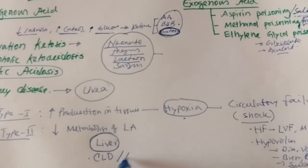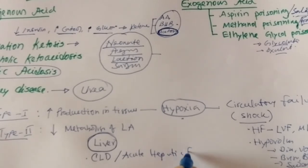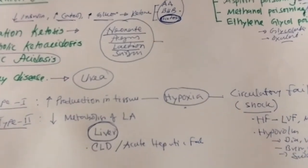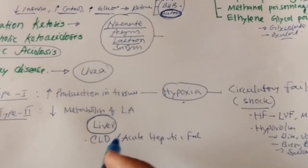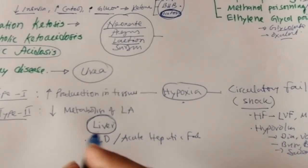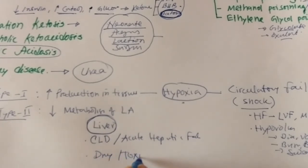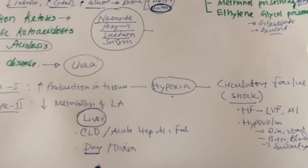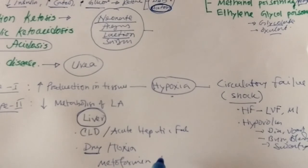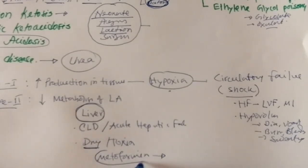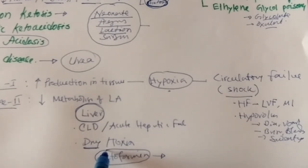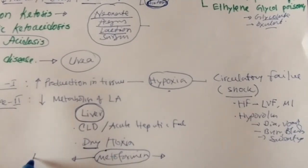Acute hepatic failure or chronic liver disease can cause metabolic acidosis due to type 2 lactic acidosis. An important drug to mention is metformin — an oral hypoglycemic agent used in the treatment of type 2 diabetes. Metformin can reduce hepatic metabolism of lactic acid, leading to accumulation of lactic acid and lactic acidosis with high anion gap.